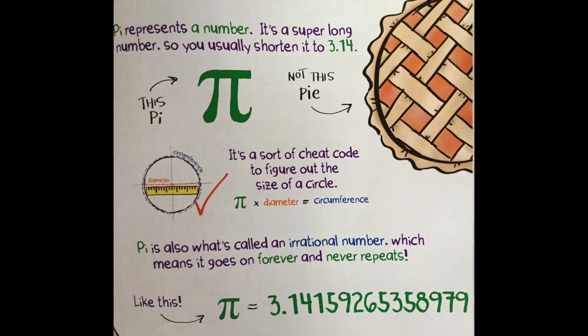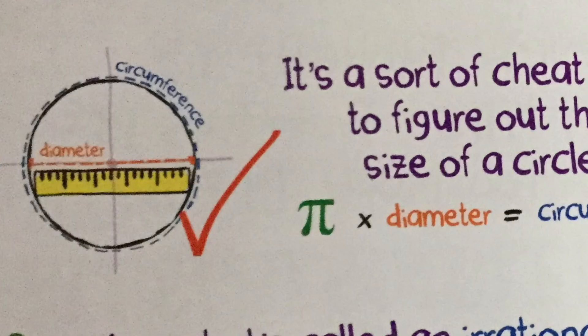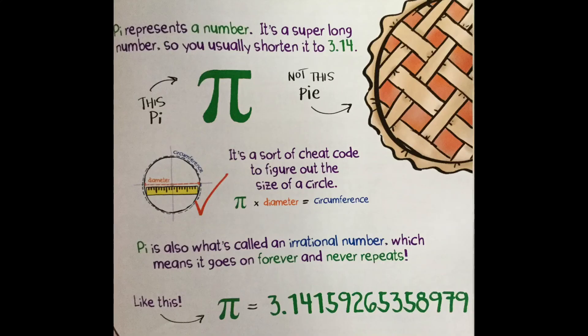I know, and the answer is easy as pi. Pi represents a number. It's a super long number, so you usually shorten it to 3.14. This is pi, not this pie. It's a sort of cheat code to figure out the size of a circle. Pi times diameter equals the circumference. Pi is also what's called an irrational number, which means it goes on forever and never repeats.